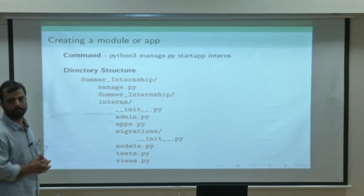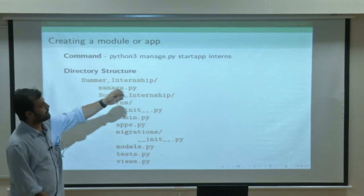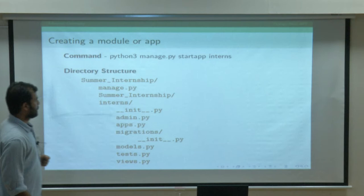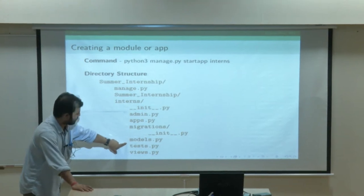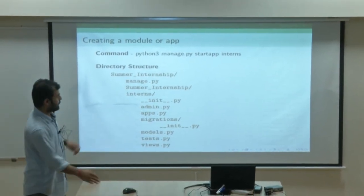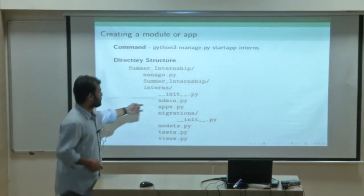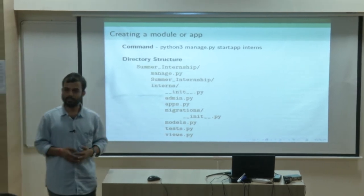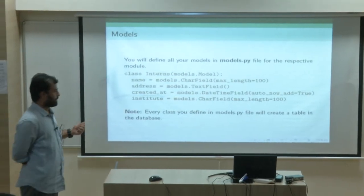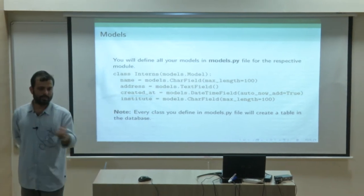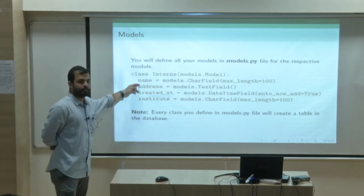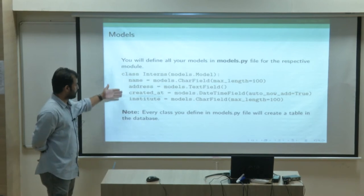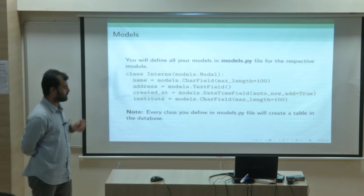You will start creating apps. To start an app, you do 'python3 manage.py startapp' and give your app name. We'll be creating the intern app. When you create an app, it creates a folder with a model file, a view file, a test file for unit test cases, and an admin file. Django provides an administration section where you can view all your models in an admin frontend. In the models file, you write your models — your ORMs. Every class is a table in your database, and every field creates a column.